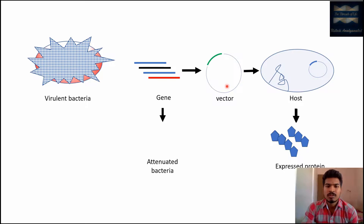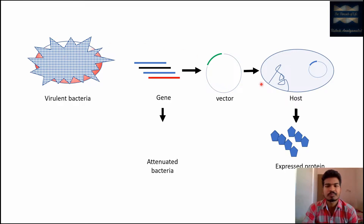Once a suitable construct is formed — suppose this is an expression vector containing a transgene that encodes the surface receptor of the bacteria — we transform the host cell with this construct. Once the transformed host cell expresses this DNA segment, the expressed proteins can be purified and used as a vaccine. This is the subunit recombinant vaccine.